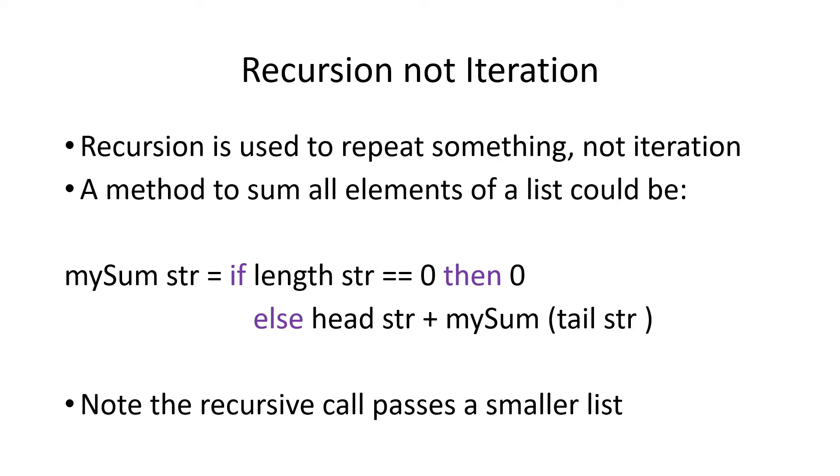Here's an example of recursion to sum all the numbers in a list. The first thing we do is see if the length of the list is zero, that is, if there's nothing else in the list. And of course, the sum of an empty list is zero. Otherwise, if it's not empty, we take the head and add the recursive sum of the tail of the string.